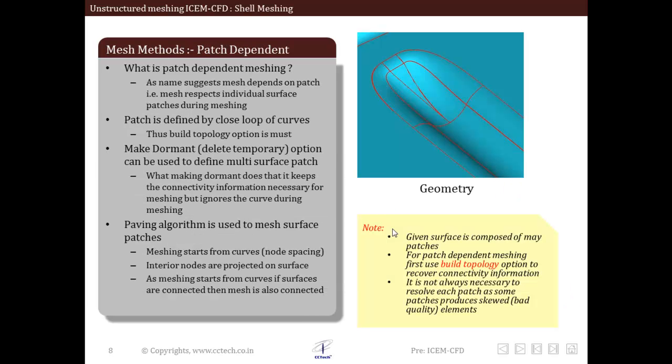Now we will discuss an important algorithm in ICEM for creating surface mesh. This is the patch independent algorithm. This is a very quick algorithm which produces very good quality surface mesh and results in good distribution of nodes. There are also some drawbacks which we will also discuss.